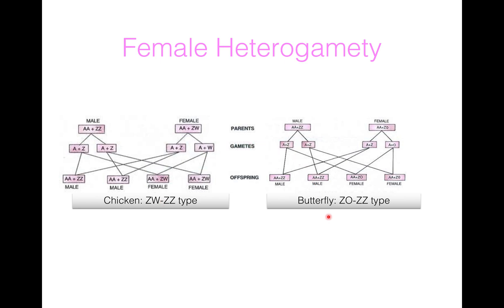Now I will explain ZO/ZZ type of female heterogamety, found in butterfly. Here the male again produces a single type of sperm, that is A plus Z. But the female produces two types of gametes: A plus Z and A plus O. When A plus Z of male fuses with A plus Z of female, a male is produced, that is double A plus ZZ. But when A plus Z fuses with A plus O, then A plus ZO is produced, that is a female. So it is a ZO/ZZ type of female heterogamety.